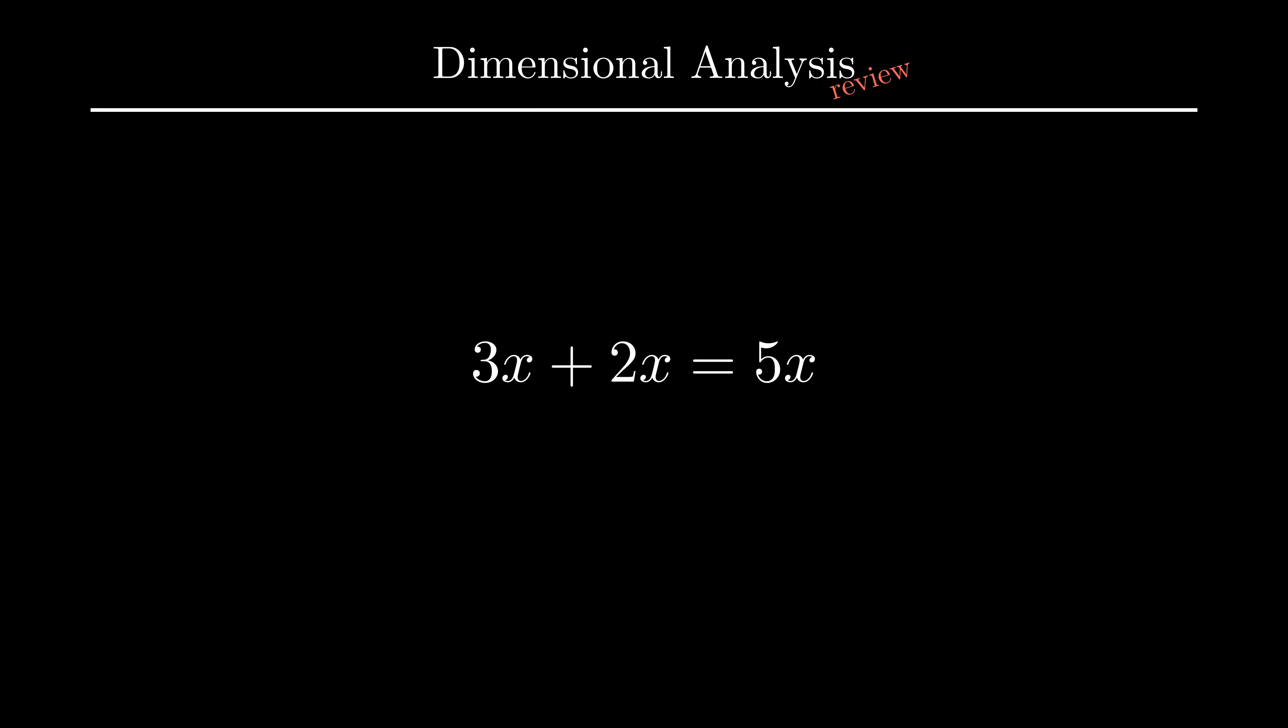We know that 3x plus 2x equals 5x, which means that we can substitute any number or expression into x and the equation would be correct. But what if I told you that you could actually substitute any dimensional units and it would still hold? For example, 3 meters plus 2 meters is 5 meters. 3 dollars plus 2 dollars is 5 dollars. 3 apples plus 2 apples is 5 apples. Almost anything can be considered a unit.